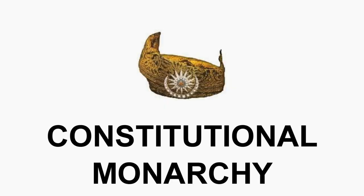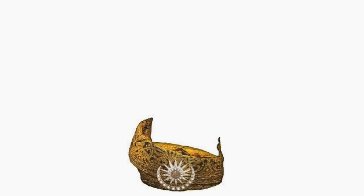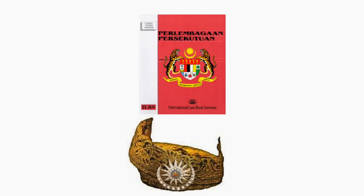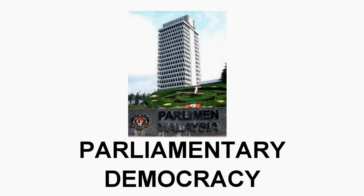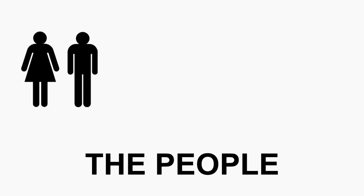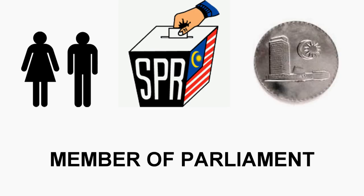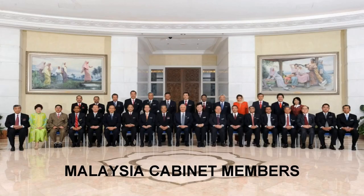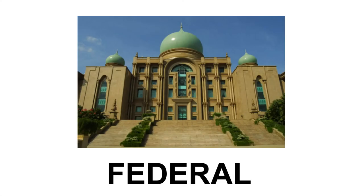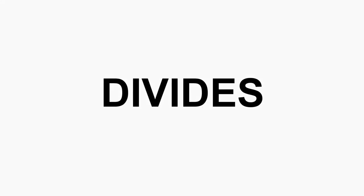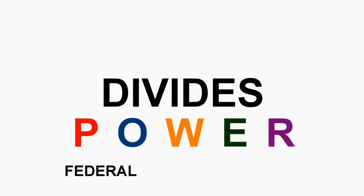In sum, there are three political systems practiced in Malaysia. The first is constitutional monarchy, where we have a monarch ruling the country but whose power is determined by the federal constitution. Second, we have parliamentary democracy, where the people elect their own representatives to the parliament and the members of parliament become part of the cabinet. And the last one is the federation, which is the system that divides the power between the federal government and the state government. That's everything. Thank you very much.